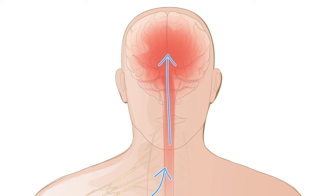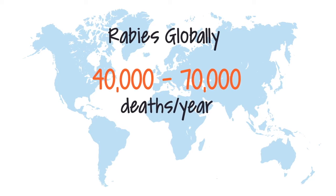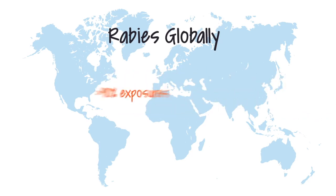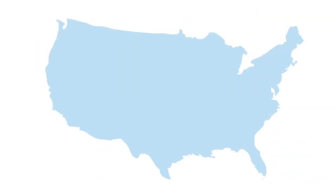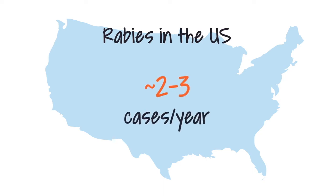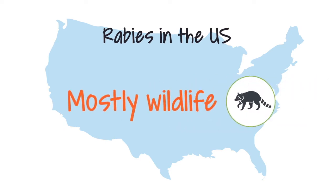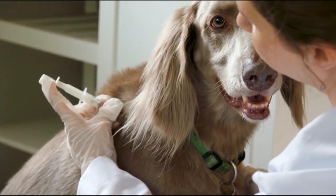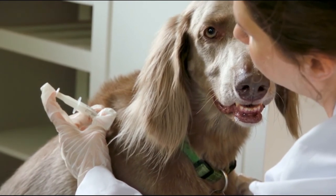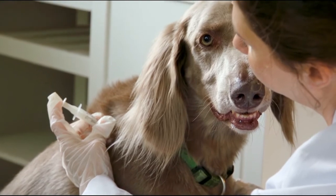Each year, rabies causes approximately 40,000 to 70,000 deaths worldwide, with a high percentage occurring in children. More than 90% of human infections worldwide result from rabid dogs. In contrast, the U.S. averages only 2 to 3 cases of rabies per year, with only 25 human cases reported between 2009 and 2019. Most U.S. infections can be attributed to wildlife rather than rabid dogs, because canine rabies has been successfully controlled through vaccination programs. Vaccination of domestic animals remains an important barrier for preventing rabies exposures.